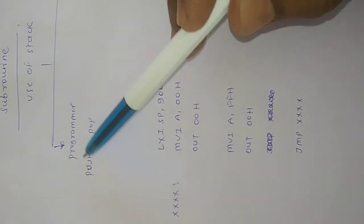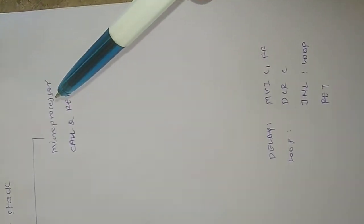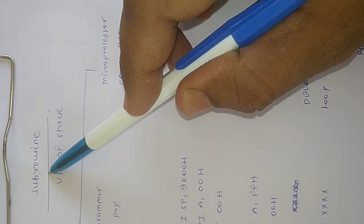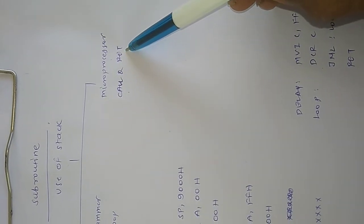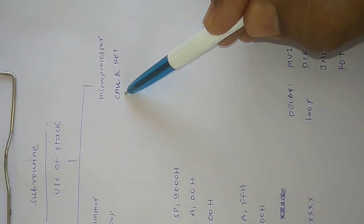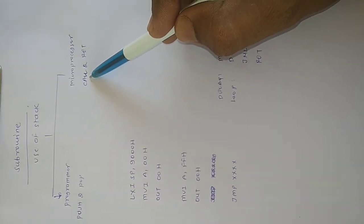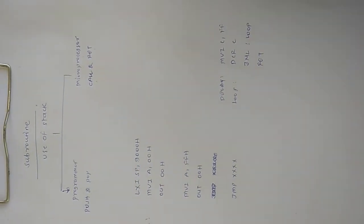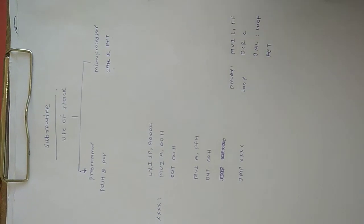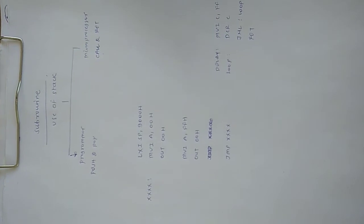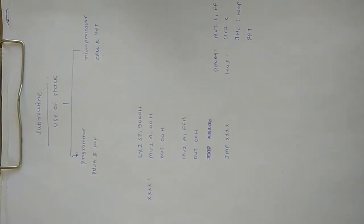One use of stack is done by the programmer using push and pop instructions, and another use of stack is done by the microprocessor when it implements a subroutine with the help of the CALL and RETURN instructions. We call the subroutine into the main program using CALL, which diverts the program to the subroutine, and the program returns back using the RETURN instruction. Every subroutine has RETURN as its last instruction.